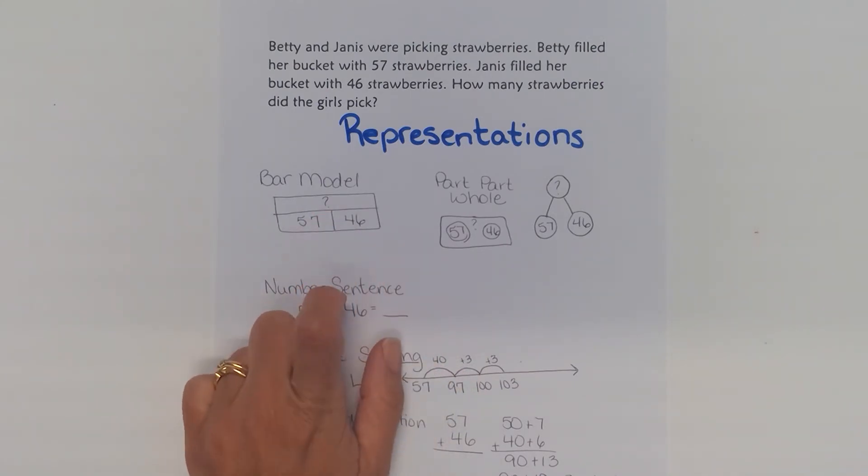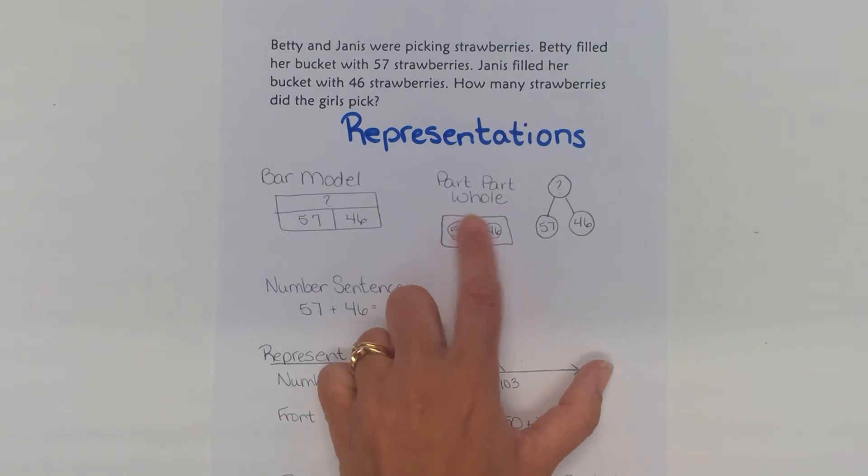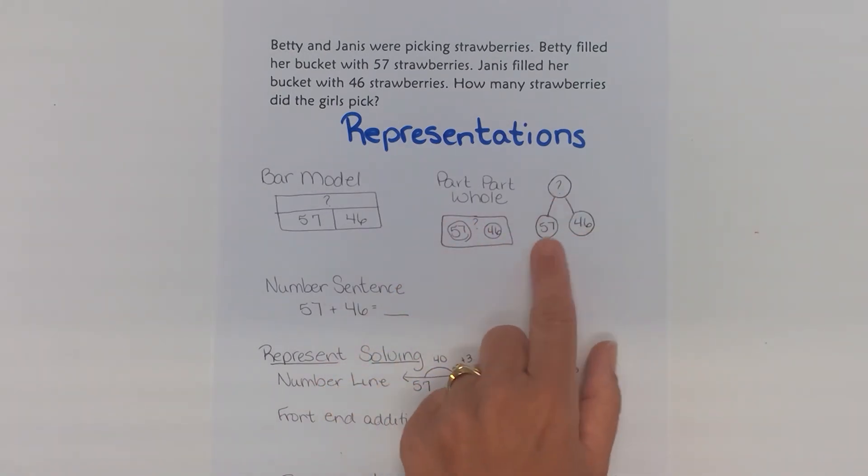It doesn't matter if you put the plus or the question mark at the top and the information at the bottom or you flip it around and you put the question mark at the bottom and the information at the top. You can also do more of a part-part-whole model where we're kind of telling the story or more like a number bond type look where I have my unknown total amount but these are the two parts that make it up.